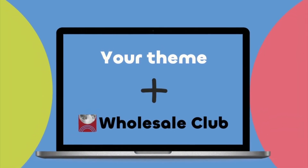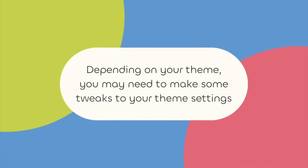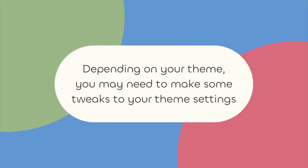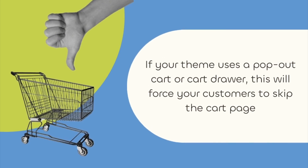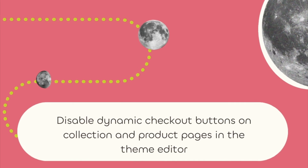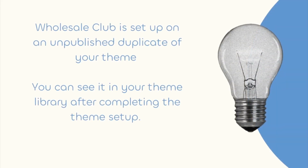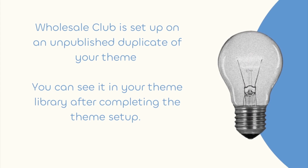Wholesale Club needs to add some code to your theme in order to create wholesale pricing. Depending on your theme, you may need to make some tweaks to ensure the app runs smoothly. Prices will not apply to an order until it reaches the checkout page, so if your theme uses a pop-out cart or cart drawer, this will cause customers to skip the cart page and therefore skip their discounts. Disable the Ajax cart in the theme editor to make sure the right price is applied. You'll also want to disable dynamic checkout buttons — PayPal, Google Pay, and Apple Pay — on collection and product pages, for the same reason: no cart, no discounts. Wholesale Club is set up on an unpublished duplicate of your theme; make sure to test the app in preview before publishing.